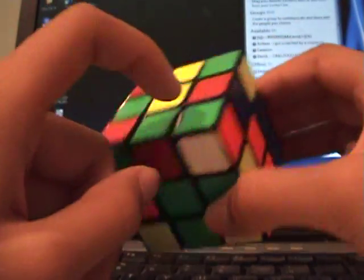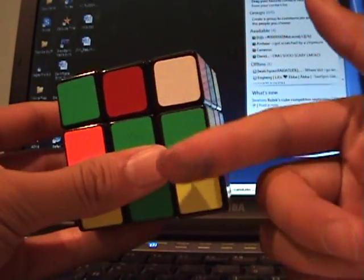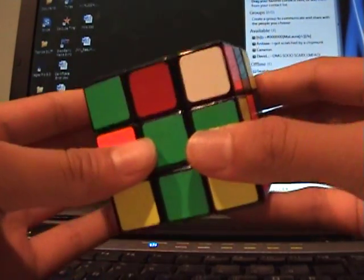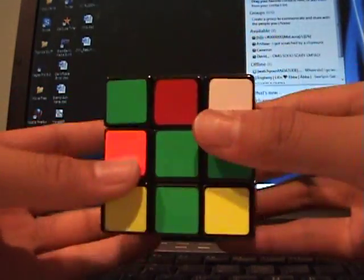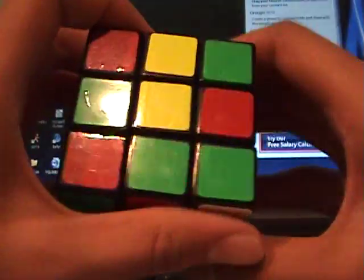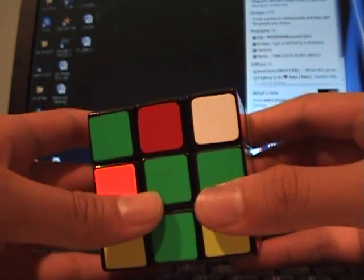I'm going to look at this corner and this edge. Since it's white, green, orange, which belongs right here, I'm going to hold it right in front of me, on the right. I'm going to look for the edge. How do I know what the edge is? Well, since this is white, the other two colors are green and orange. The green and orange edge is right here.